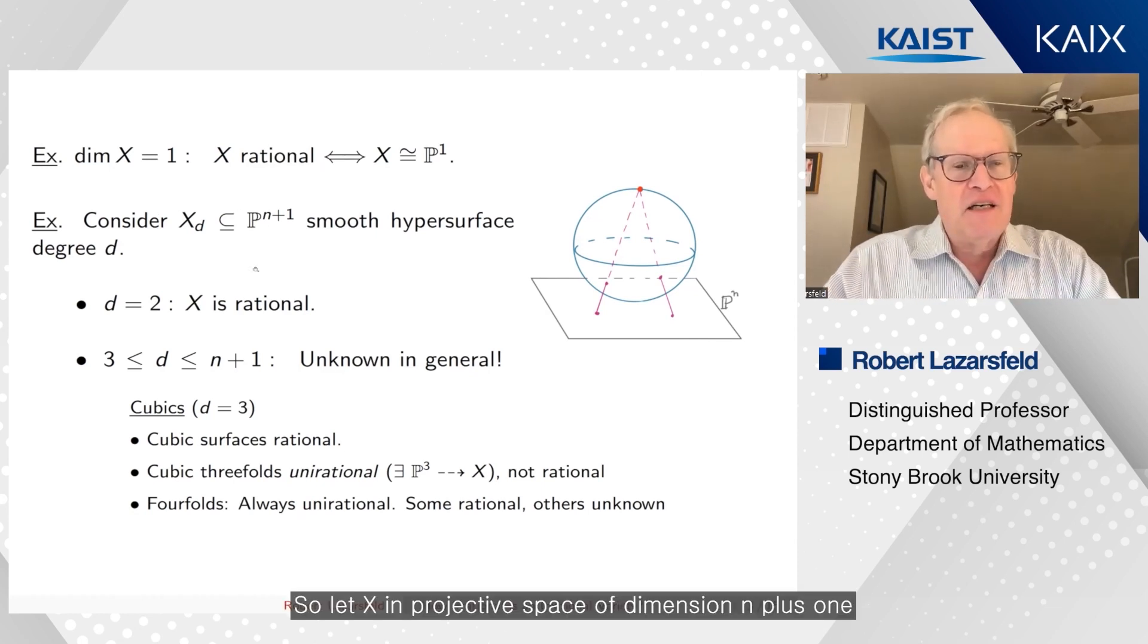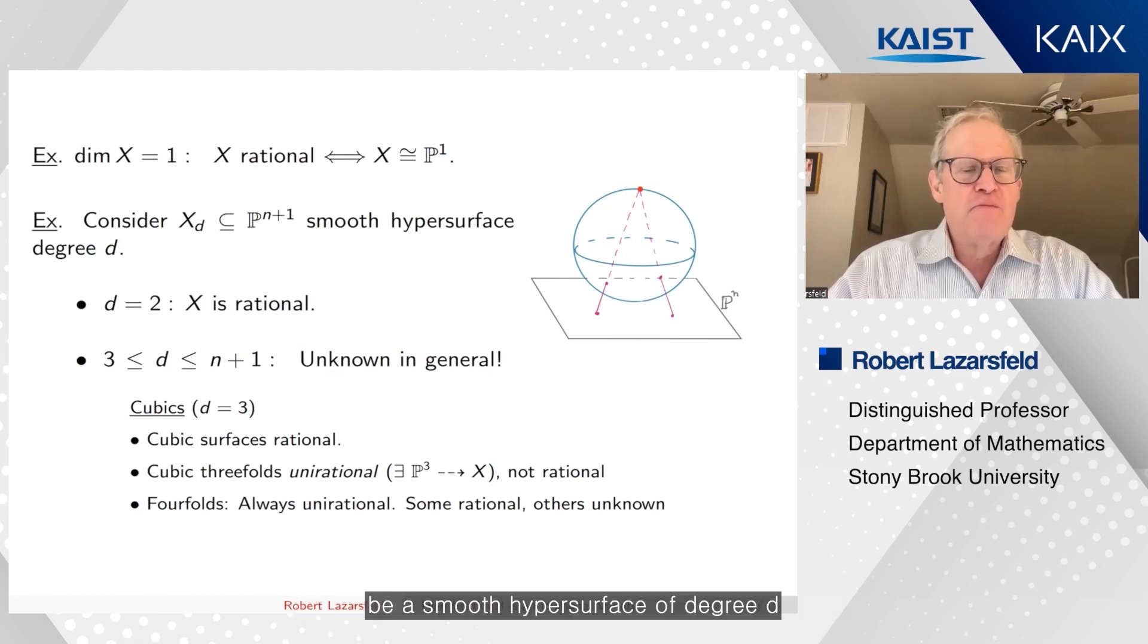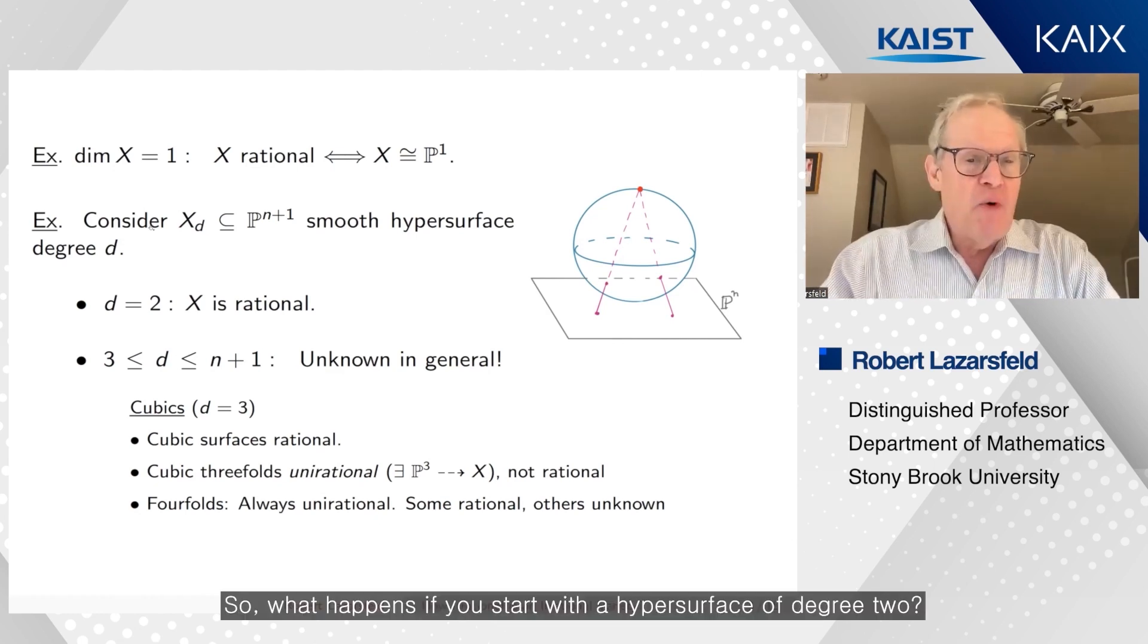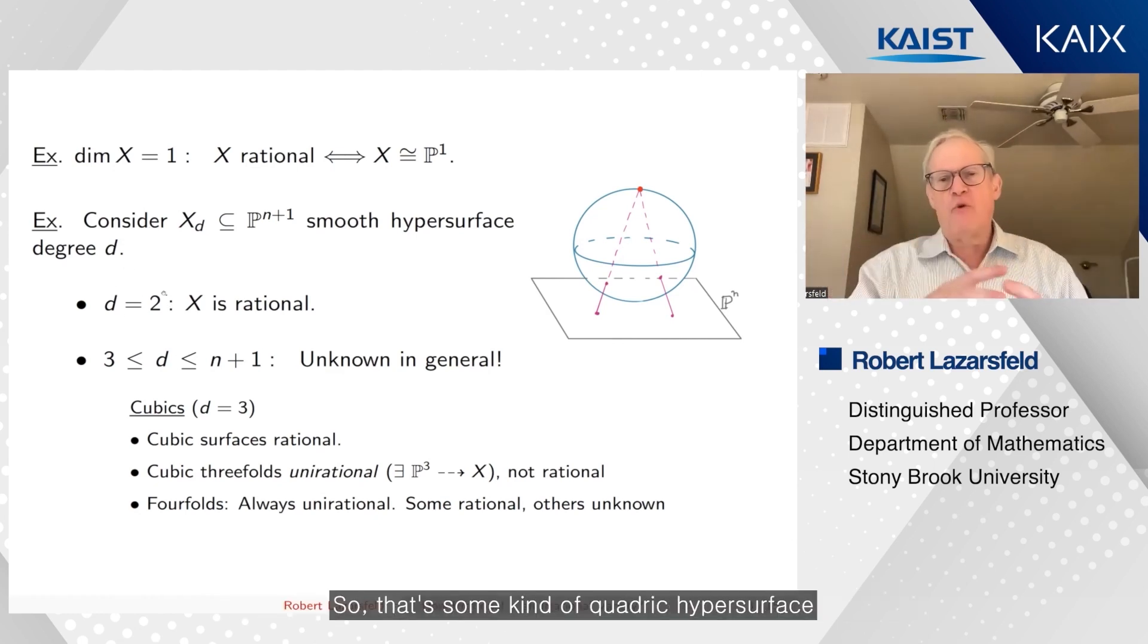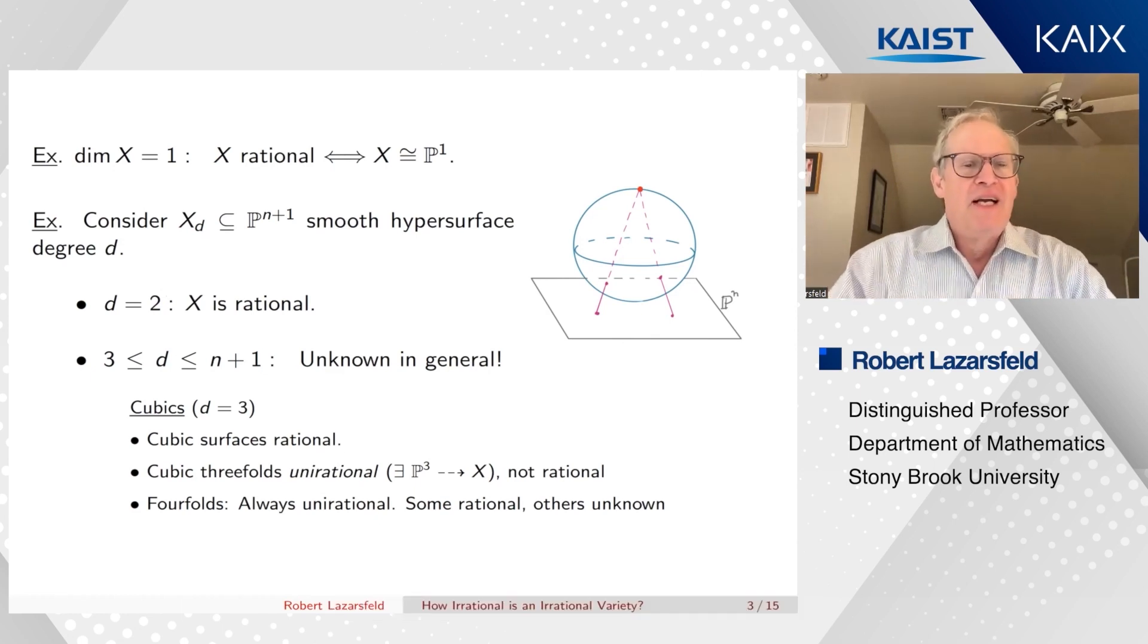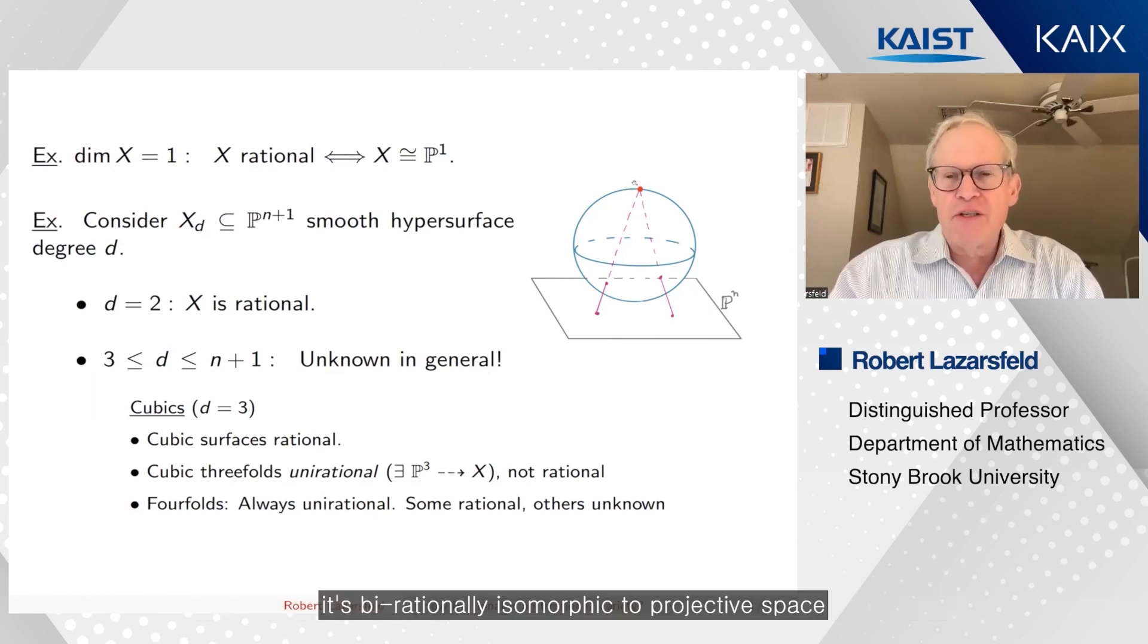So let's let X_d in projective space of dimension n+1 be a smooth hypersurface of degree d. So what happens if you start with a hypersurface of degree two? So that's some kind of quadric hypersurface. And then it's very classical that a quadric hypersurface is always rational. It's birationally isomorphic to projective space.